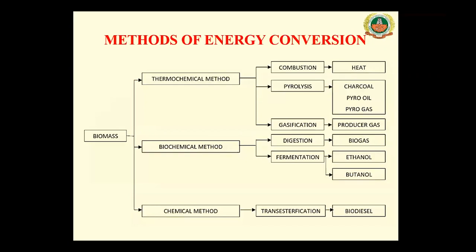There are three ways to go for energy conversion. One is thermochemical, another is biochemical, and the third is the chemical method. All three focus on generating fuels. Through combustion, we can get heat directly. We can also get gases, or fuels in solid and liquid form, using several conversion methods.